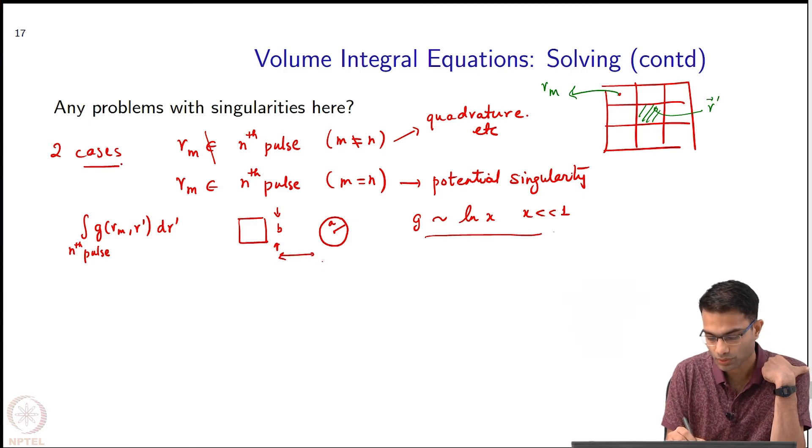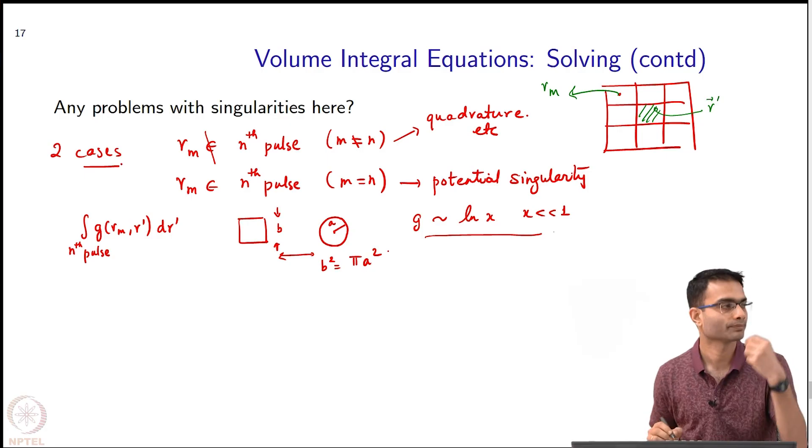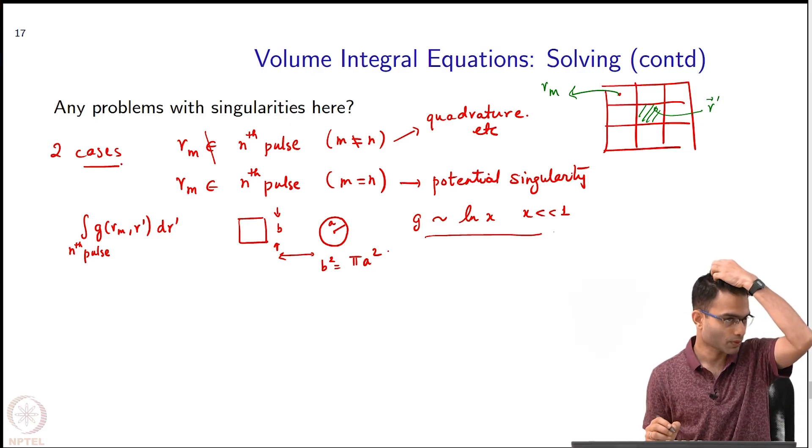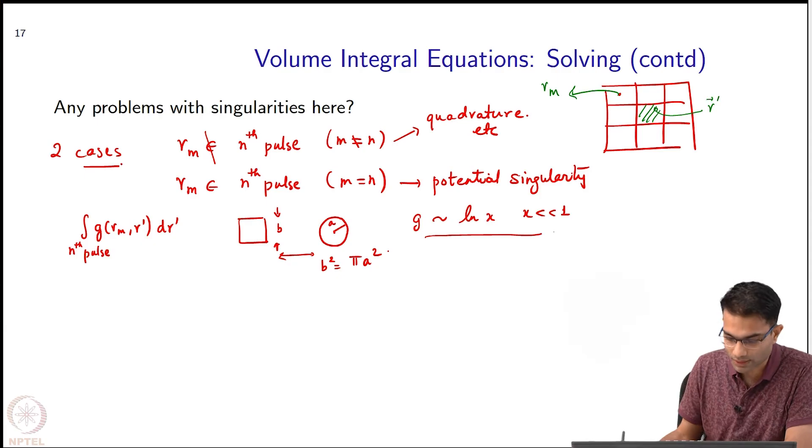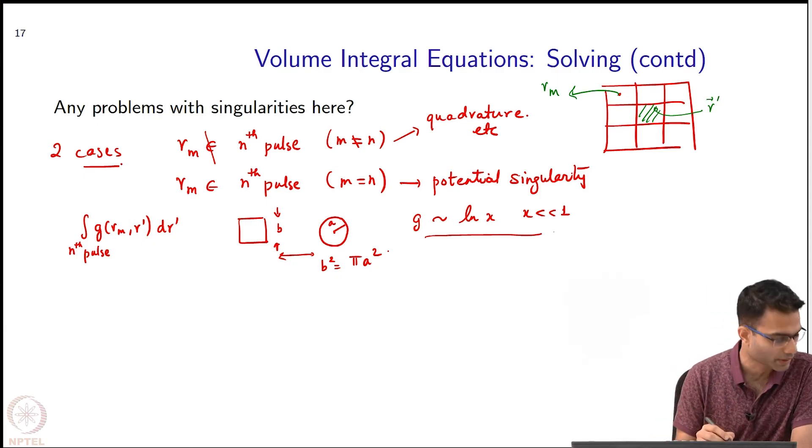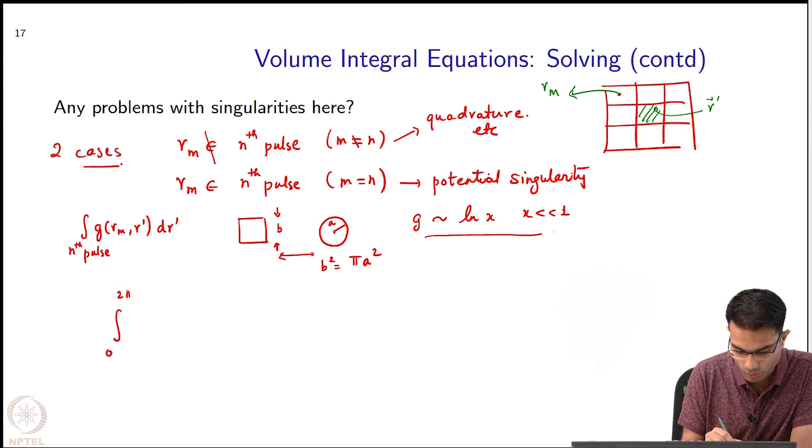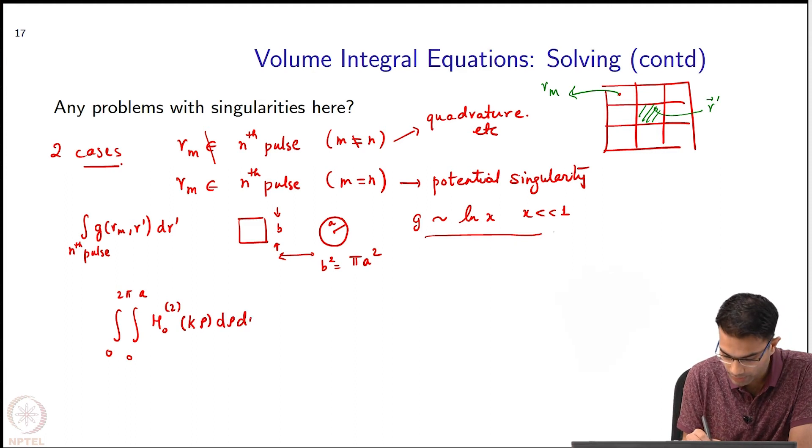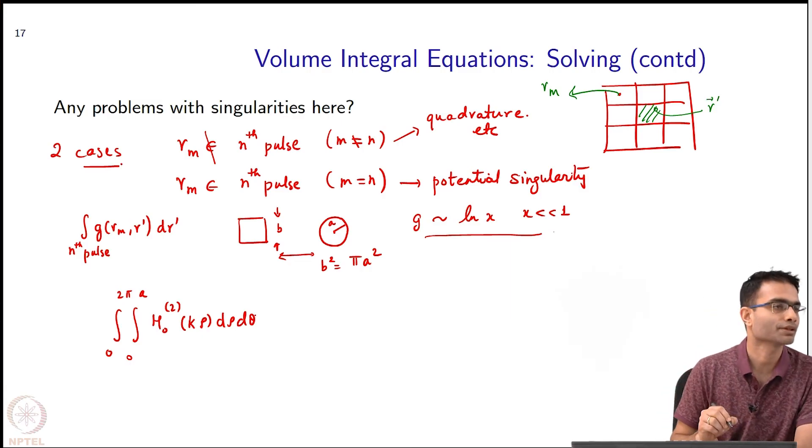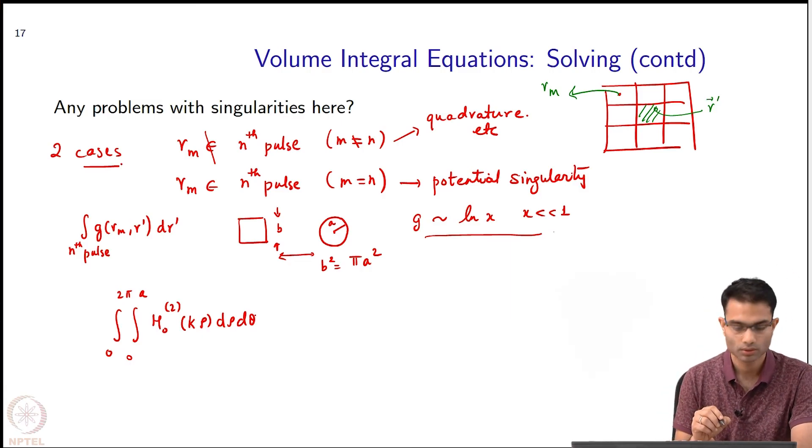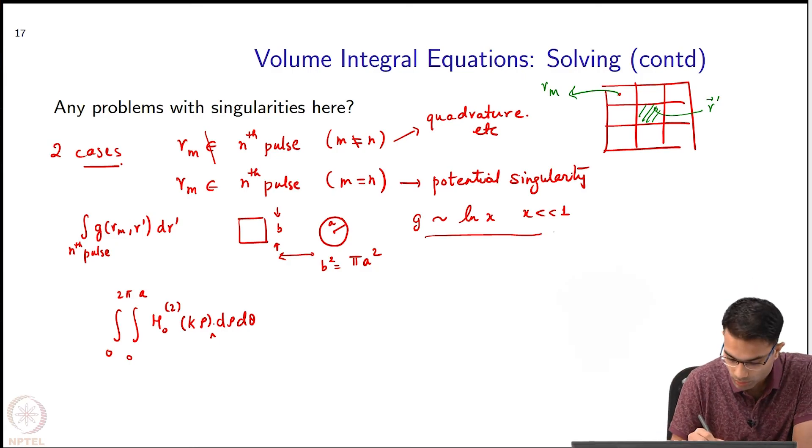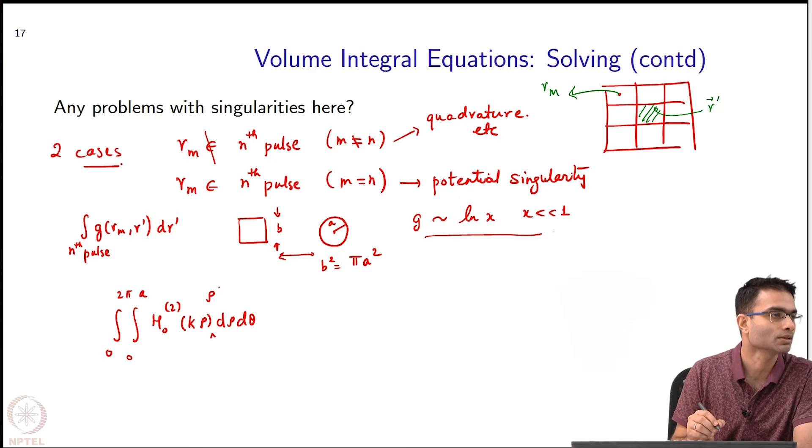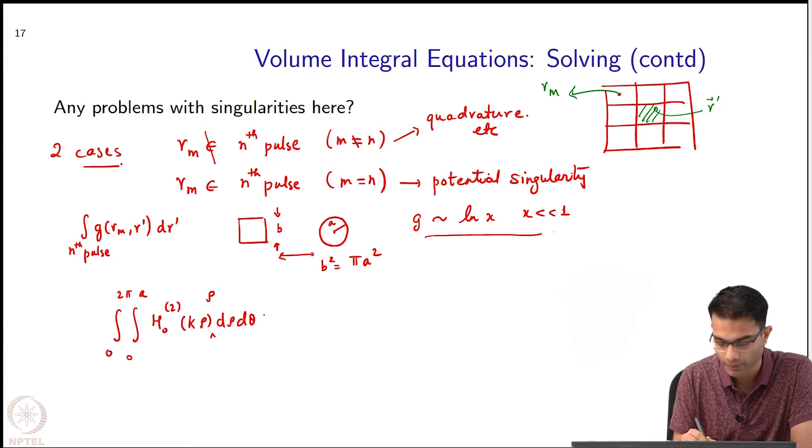So the area should be the same. So b squared should be π a squared. So that is what I will do. And once I know this, it turns out - I will just write down the final expression, you can do this integration yourself looking at the handbooks. So 0 to 2π, I am integrating over a circle, 0 to A, h_0^(2)(k ρ) ρ dρ dθ. This is integration over a circle, right? ρ dρ - I am missing a rho. There is a ρ, ρ dρ dθ - that is the 2D differential element integrating, and I have my k h_0^(2).